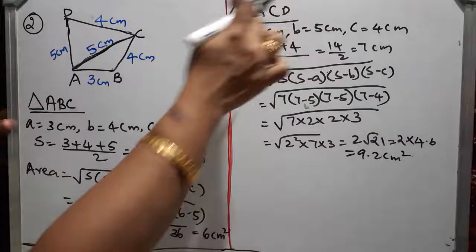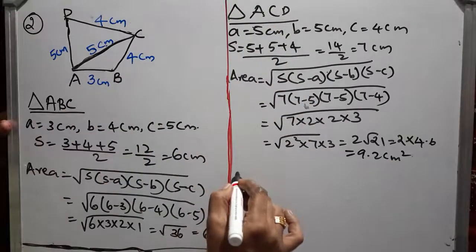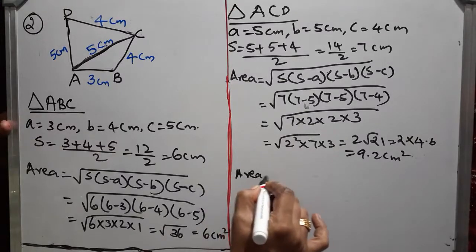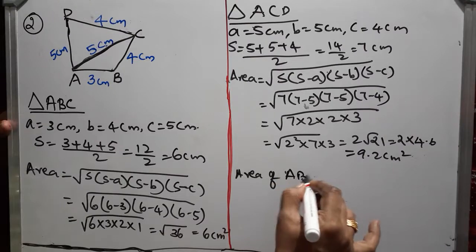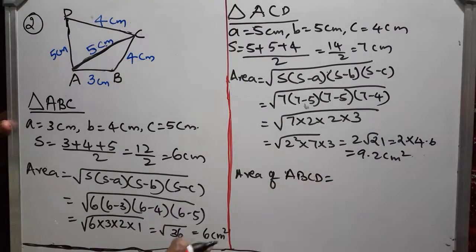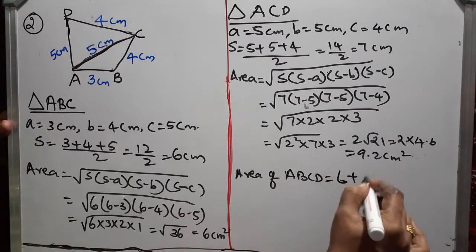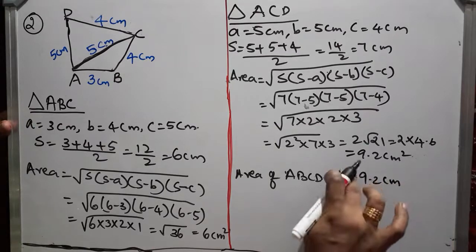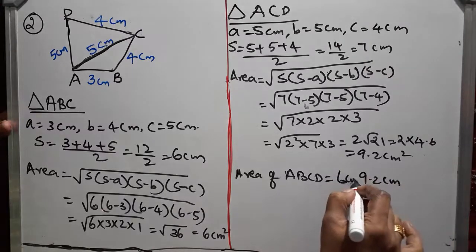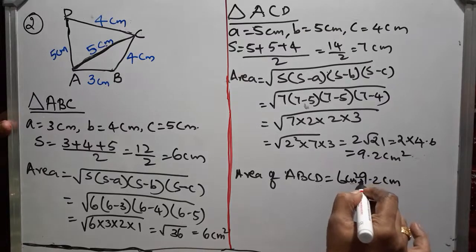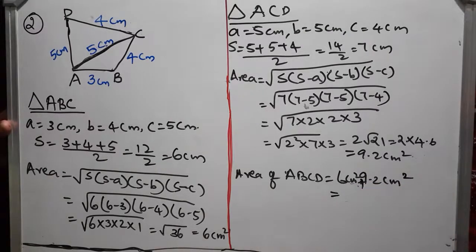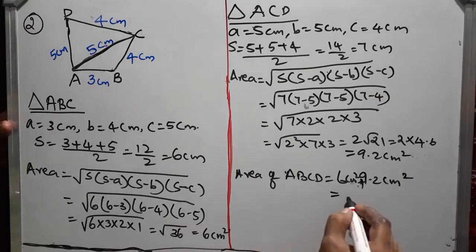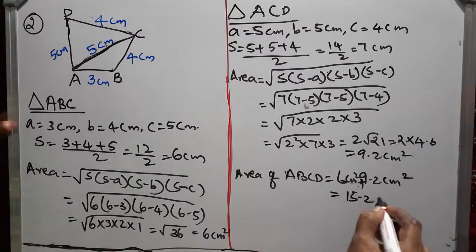Now, the two areas ACD as well as ABC. So, what is the required area of this quadrilateral ABCD which is equal to here 6 plus 9.2 cm square. 6 cm square plus 9.2 cm square is equal to 6 plus 9.2 which is equal to 15.2 cm square. That is the answer.